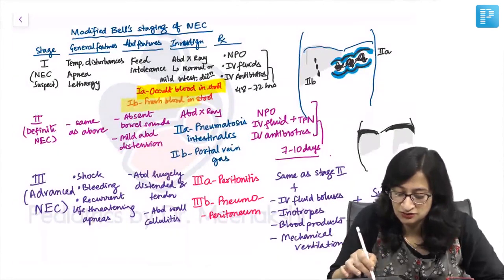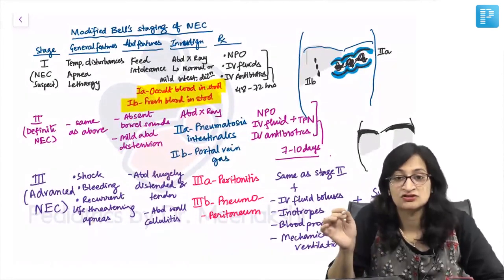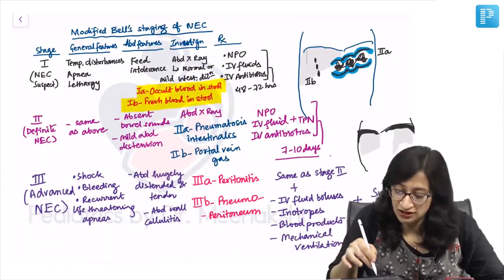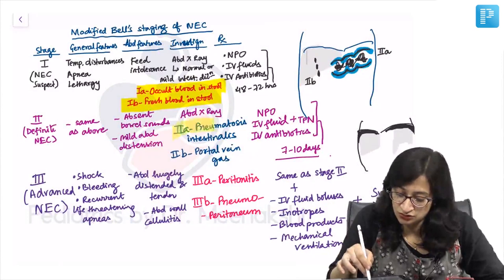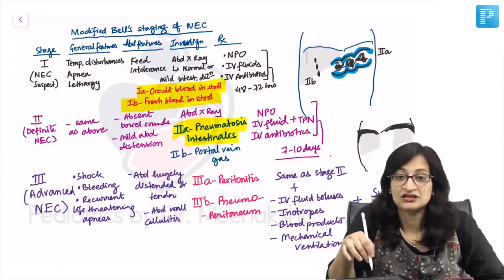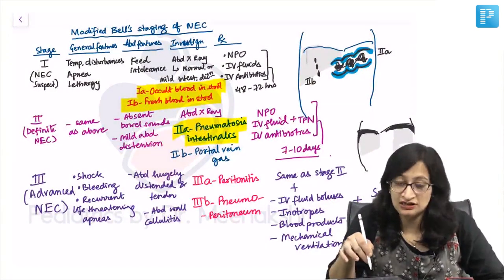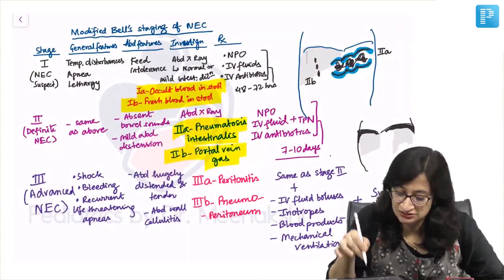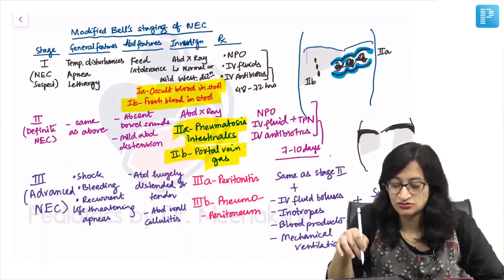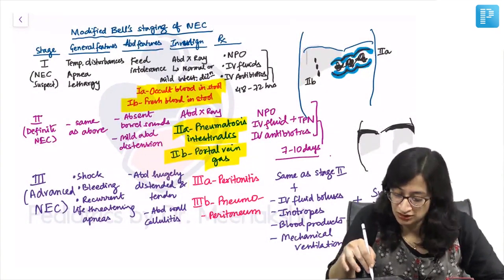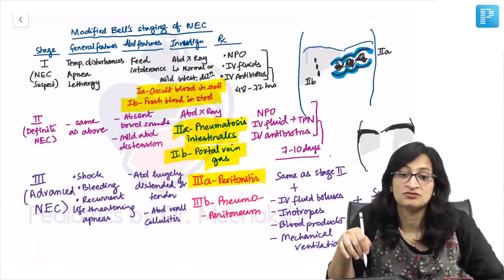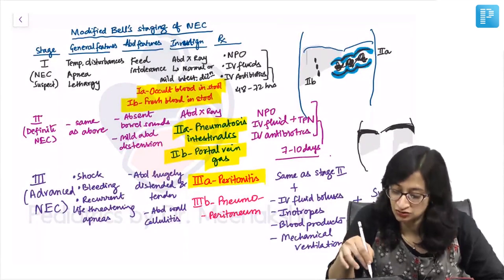Stage 1B: fresh blood in stool. Stage 2A: pneumatosis intestinalis. Stage 2B: portal vein gas. Stage 3A: peritonitis. And stage 3B: pneumoperitoneum.